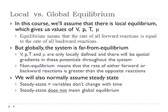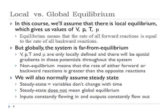Throughout most of this course we'll assume steady state, which means variables do not change with time. But steady state does not mean global equilibrium — it just means the forward reactions are always greater than the backward reactions. As long as you're pumping in hydrogen and oxygen at a constant rate, and water is leaving at a constant rate, the system is not in equilibrium but it is in steady state: nothing is changing with time. Inputs are constantly flowing in and outputs are constantly flowing out.